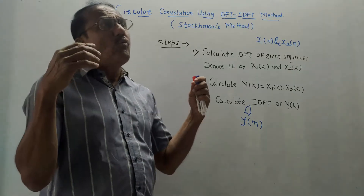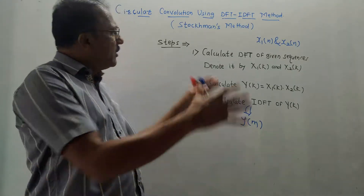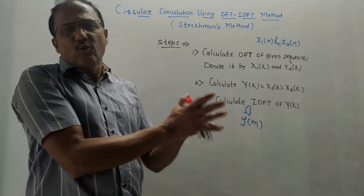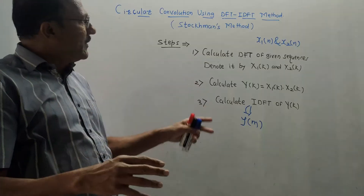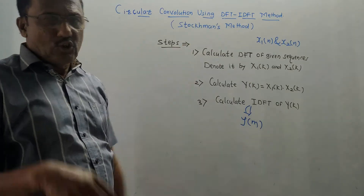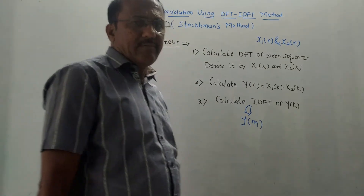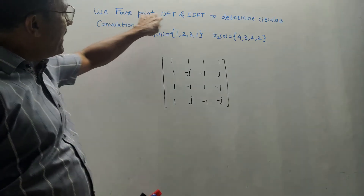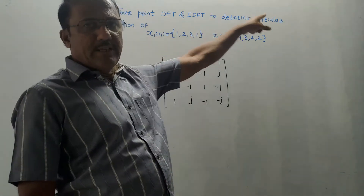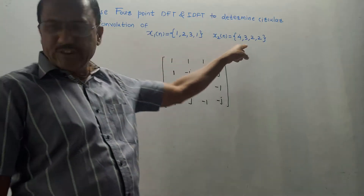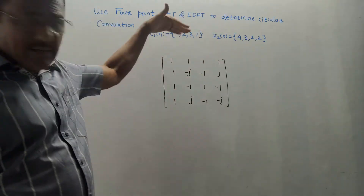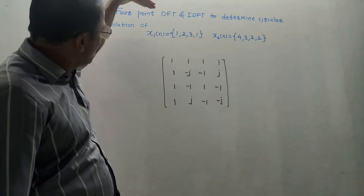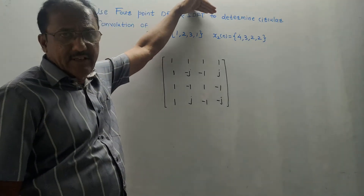There are only two types of numericals; we will be covering both in this session. The question is: use 4-point DFT and IDFT to determine the circular convolution of the two given sequences. As mentioned, this will be clearly stated in the question — 'use 4-point DFT and IDFT.'